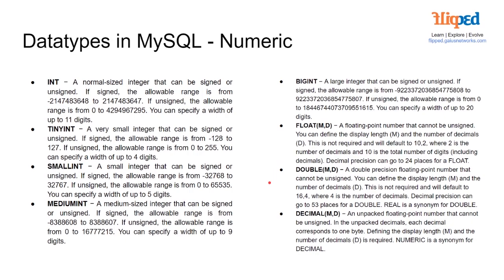Our double precision floating point number also cannot be unsigned. You can define the display length, m, and the number of decimals, d. This is not required and will default to 16,4 — where 4 is the number of decimals. Decimal precision can go to 53 places for a double. Real is a synonym for double. For decimal, an unpacked floating point number that cannot be unsigned — in unpacked decimals, each decimal corresponds to one byte. Defining the display length, m, and the number of decimals, d, is required. Numeric is a synonym for decimal.